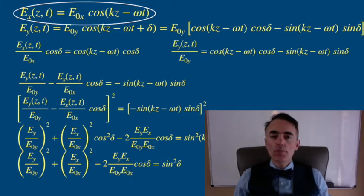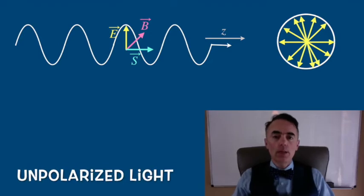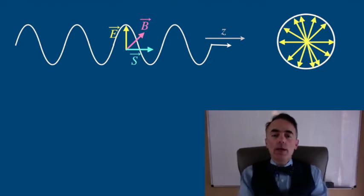Photons coming from a light bulb or from the sun come polarized in all the directions. These sources of light produce unpolarized light. So how do we obtain polarized light?